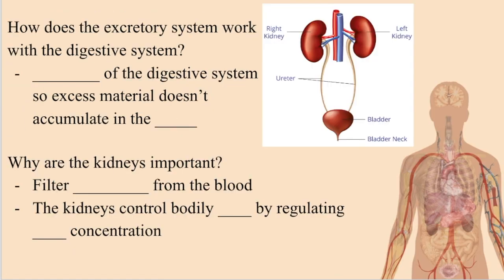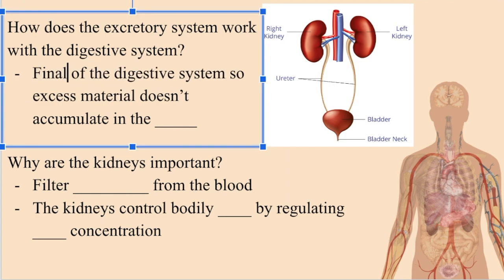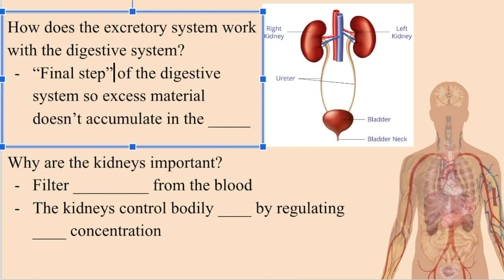Interestingly, the excretory system works rather closely with the digestive system to provide essential biological activities. The digestive system breaks down and extracts nutrients from materials inputted into the body such as food. Once this system has run its course, the excretory system acts almost like a final step in digestion by excreting waste products from the digestive system through defecation and urination, so that such waste products don't accumulate in the gut.